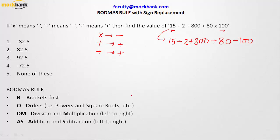Now, what is the concept of BODMAS? Should we go left to right, or solve division first? In BODMAS, B stands for Bracket — if there are brackets in the expression, solve those first. O stands for Orders, meaning powers, square roots, cube roots, and so forth. After brackets, we solve orders. Then we have D and M — division and multiplication.